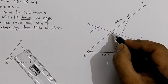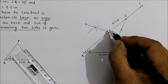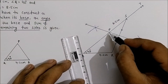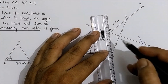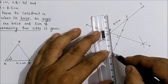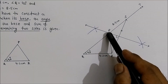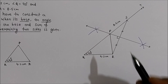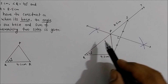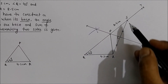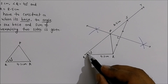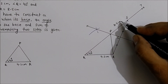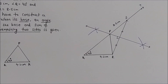This intersection point is point P. Join P to R. We have now got triangle PQR — the required triangle. Point P lies on the perpendicular bisector of SR. Angle Q = 40 degrees, base QR = 4.2 cm, and PQ + PR = 8.5 cm.